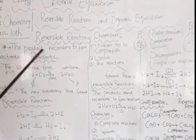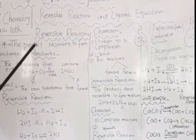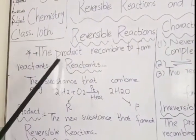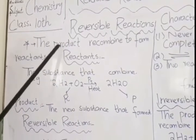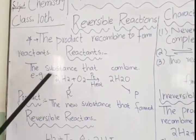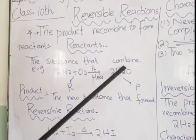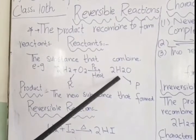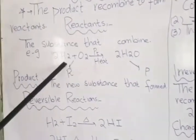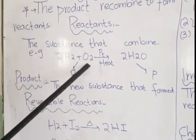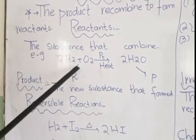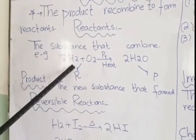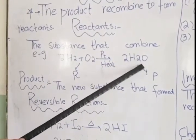Reversible reactions are reactions where products can recombine to form reactants. We have two key terminology: reactants and products. Reactants are combined — for example, if we combine water and oxygen and provide heat, we get a combination reaction. The substances before the reaction, which are Hydrogen plus Oxygen, are called reactants. After the chemical reaction, the new substance formed — water molecules — is called the product.